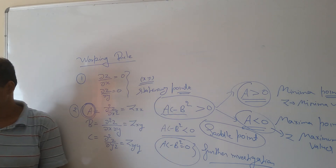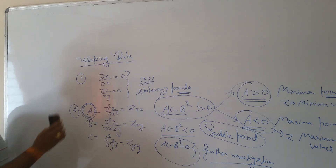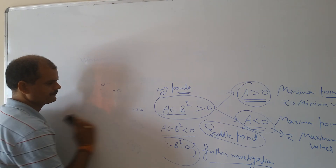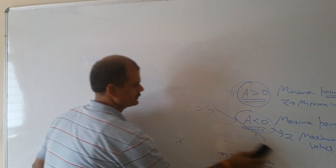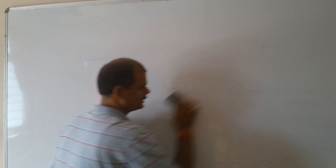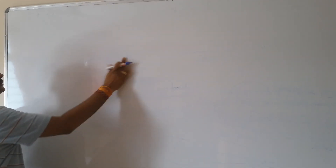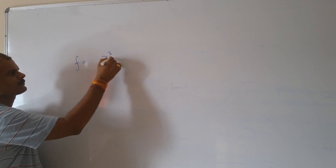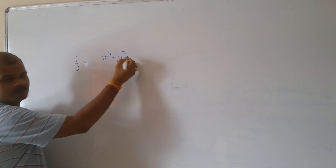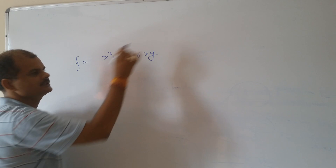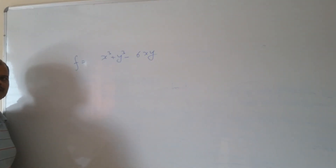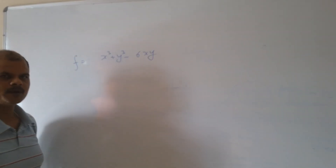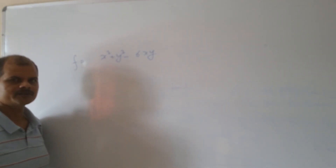Let us take one example so it will be clear. We have f equal to x³ plus y³ minus 6xy. This is the given function. The question is to find the extrema point of the given function.